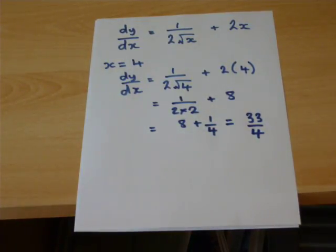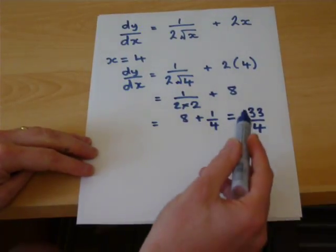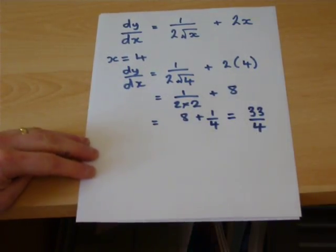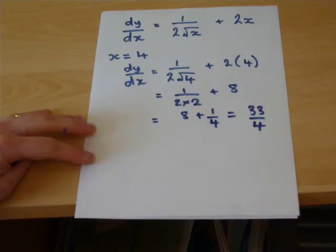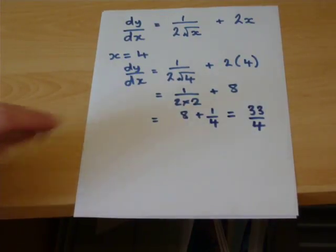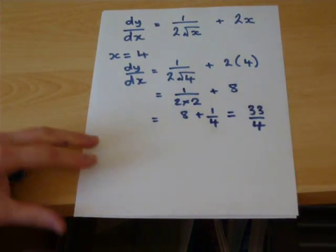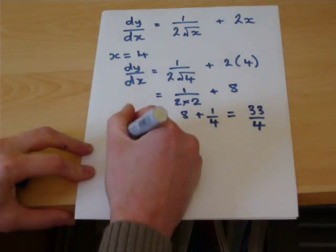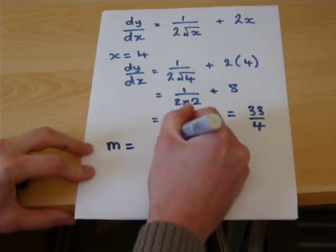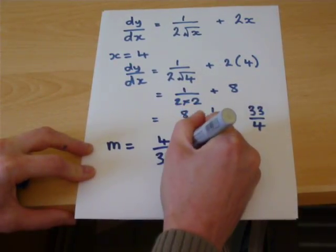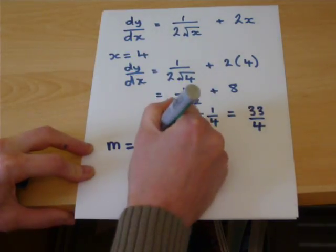That is what a calculator would give you if you put x equals 4 into the gradient function. So, this is the gradient of the curve. But we wanted the normal gradient. The normal is perpendicular. So, the normal must have the gradient of the reciprocal with the sign changed.